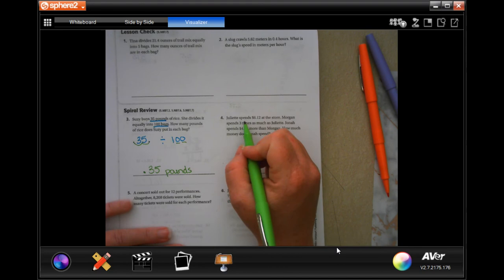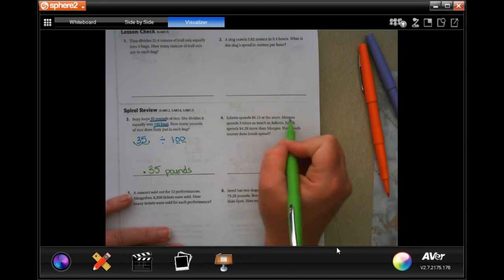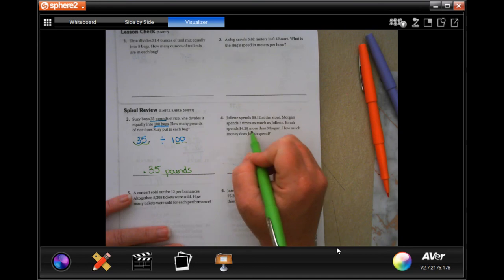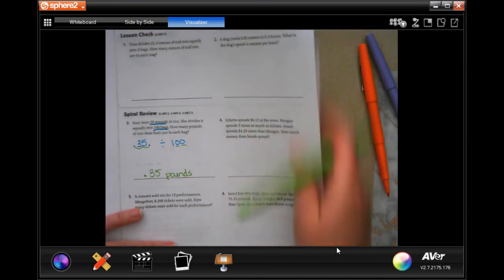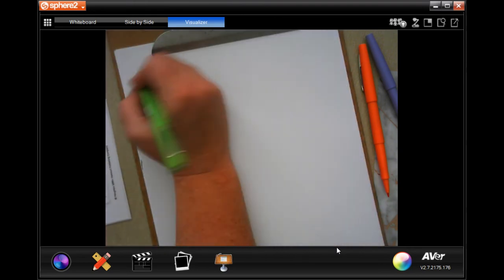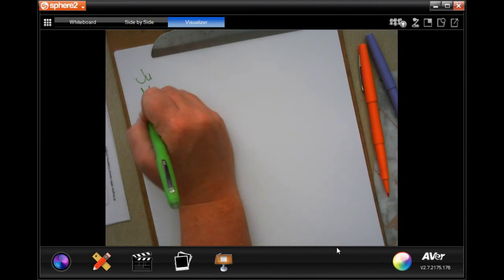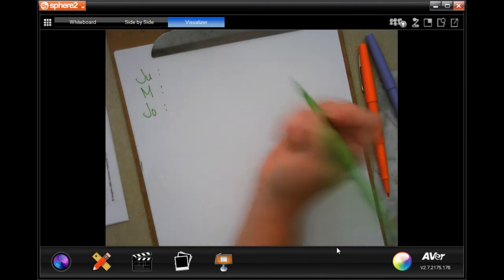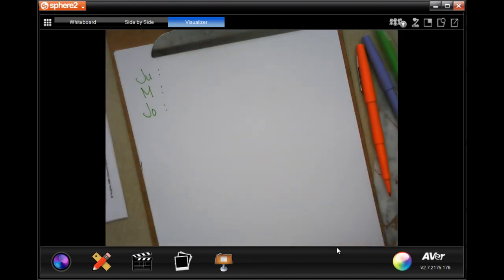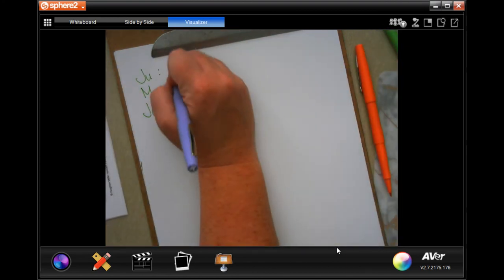Juliet spends $6.12 at the store. Morgan spends three times as much as Juliet, and Jonah spends $4.29 more than Morgan. How much money does Jonah spend? Juliet, Morgan, and Jonah. Juliet, it tells us, spends $6.12.